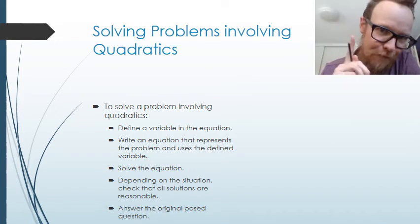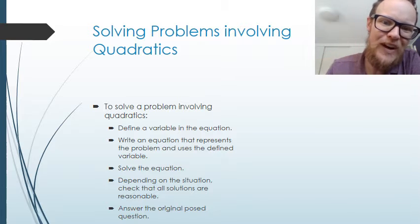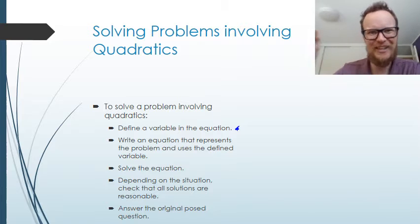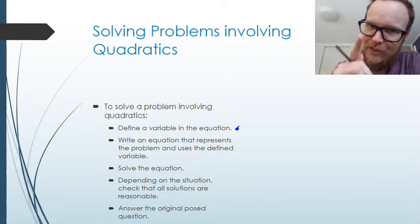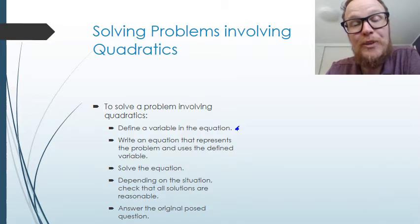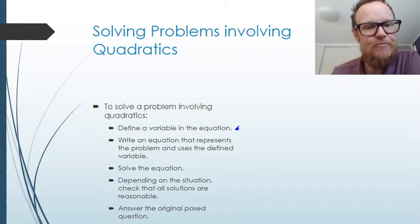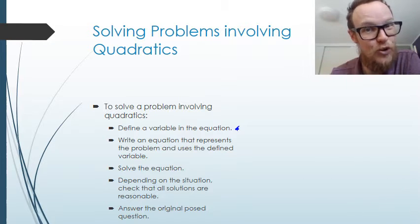Let's have a look at what we need to do. Firstly, we need to define a variable in the equation. We need to say this is going to be this, and this is going to be that. We need to make sure we say that, it's very important. Then we need to write an equation that represents the problem, write that equation down, uses that defined variable to make sure it's all clear.